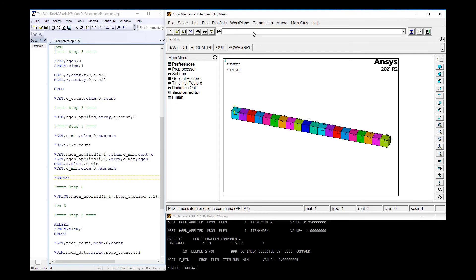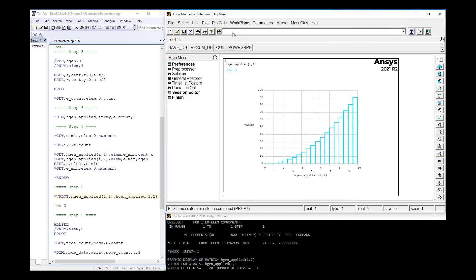And now an XY graph of the element's heat generation can be plotted versus the element's X centroid location with the *VPLOT command. And as expected, the applied heat generation is a squared value of the position value.